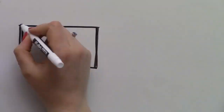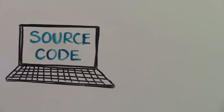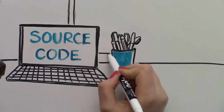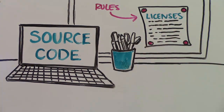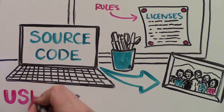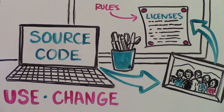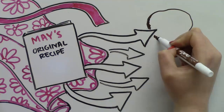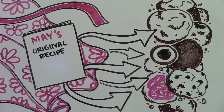The same thing happens when someone writes and publishes an original version of open source software. They put rules, called licenses, in place so that others can use and change the code they've written, as long as they follow the author's license. Grandma May's recipe provides her family with a place to start that they can customize to their own liking.